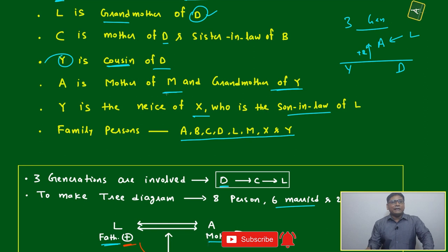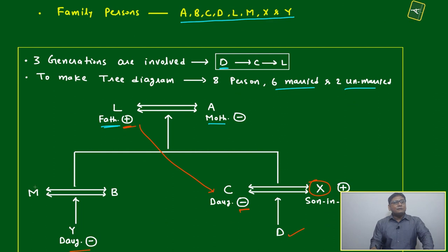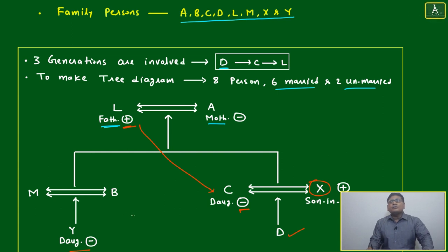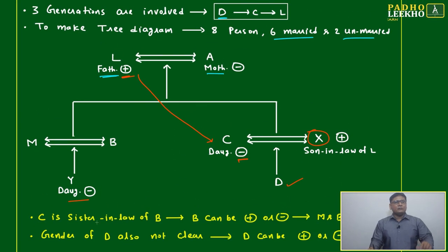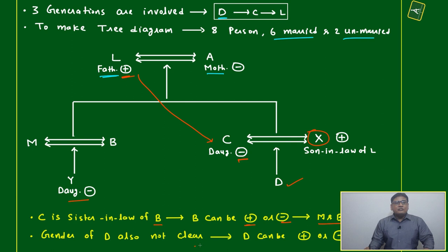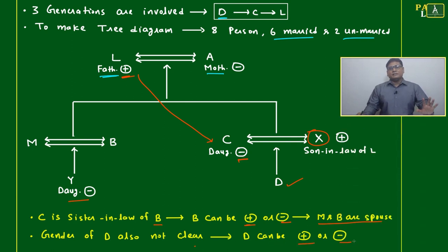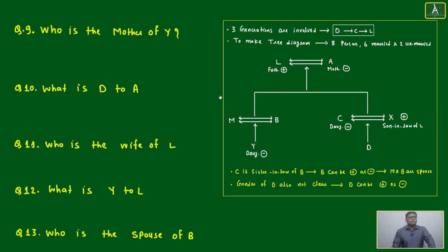It is given that A is the grandmother of Y and the mother of M. Mother of M means M can be male or female — anything. So M and B are spouses to each other but we don't know who is the husband and who is the wife. Their genders are not clear. Also, the gender of D is not clear — D can be male or female. C is the sister-in-law of B, meaning B can be anything.